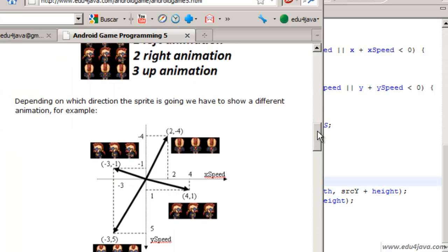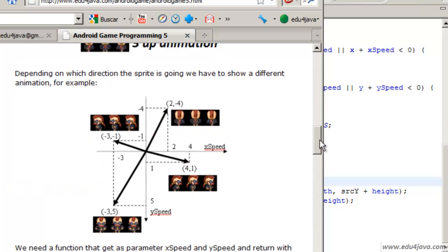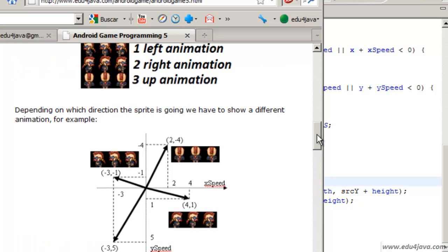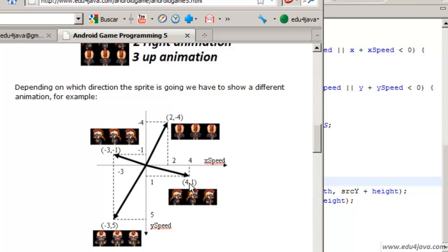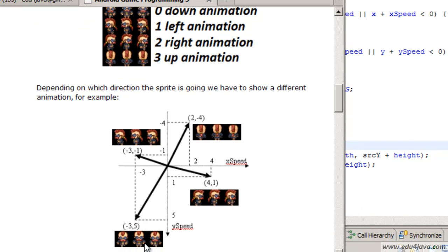As we see in this graphic, we don't always want to use number 1. For example, in the direction x speed and y speed is 2 and minus 4, the real direction would be this one, so we should be using this one, which is the number 3. If it is minus 3 and minus 1 x speed and minus 1 y speed, we should use this one. If it is 4, 1, we should use this one, which is number 2.